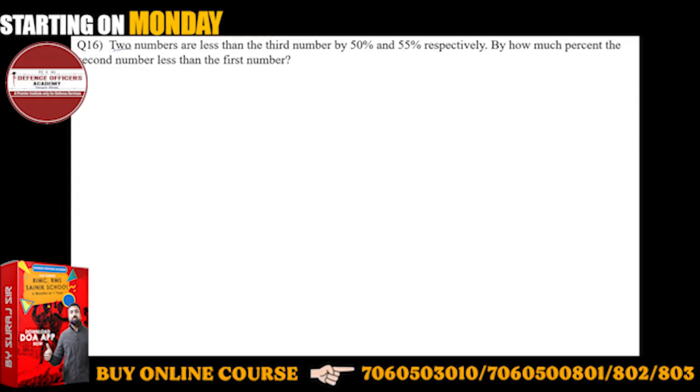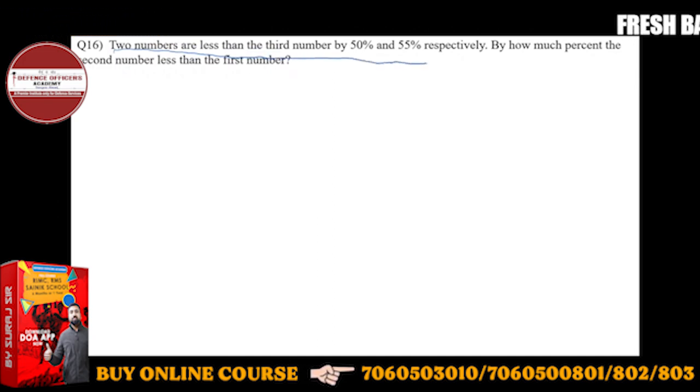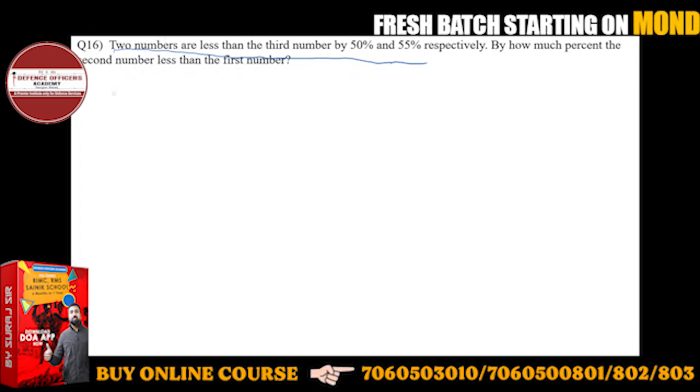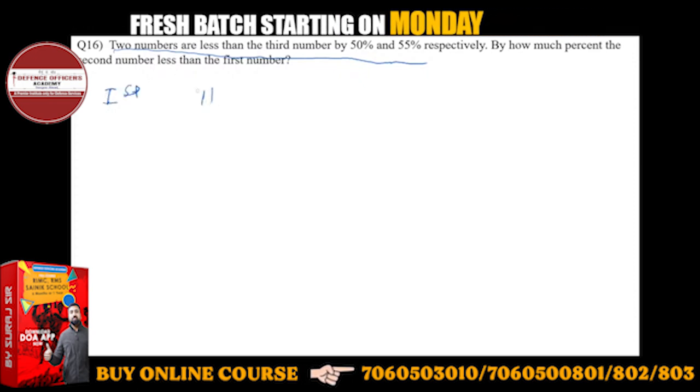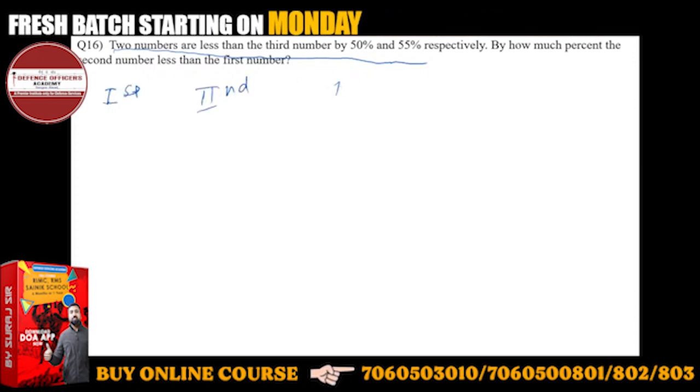So, two numbers are less than the third number by 50% and 55% respectively. These are two numbers which are less than the third number, so take the third number. Suppose this is the first number, this is the second number, and this is the third number.